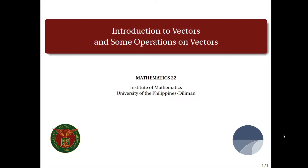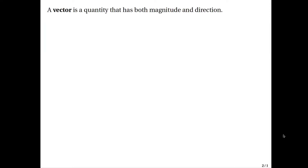So let's begin with the definition of a vector. What is a vector? A vector is just any quantity with both magnitude and direction. Some examples will include displacement, velocity, or force. Now if you're hearing these terms for the first time, don't worry, you will encounter them in future lectures.